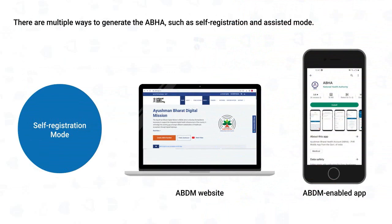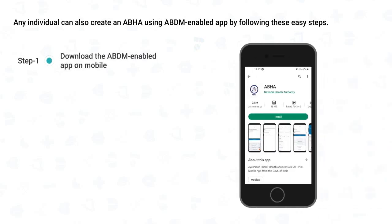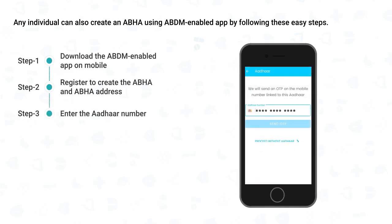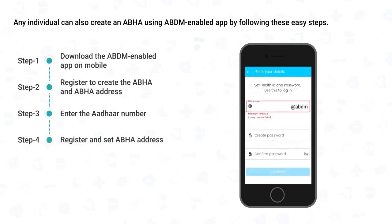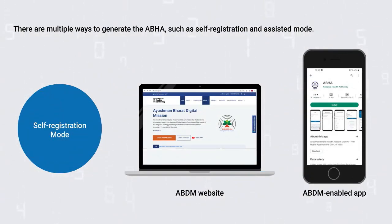Now let us learn how to generate ABHA using an ABDM-enabled app. First, download an ABDM-enabled app like Arogya Setu from the App Store on your mobile phone. Click on Register to create the ABHA number and ABHA address. Next, enter your Aadhaar number and verify the OTP. Then click on Register and set your ABHA address, which is an easy-to-remember user-generated or default address in the format XYZ@ABDM. We have just seen two modes of self-registration of ABHA.